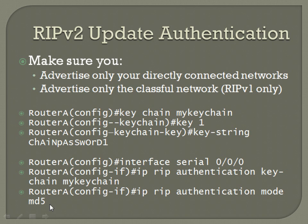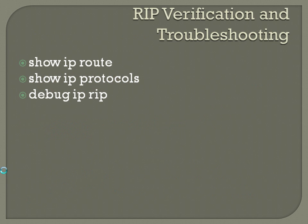Also, 'ip rip authentication mode md5' — that's actually an optional command, but it adds encryption so your keys are not passed in plain text. It uses MD5 to encrypt the keys so that when they are exchanged between routers, they're not going across in plain text.